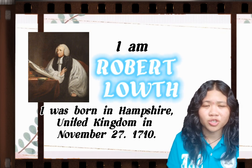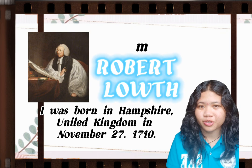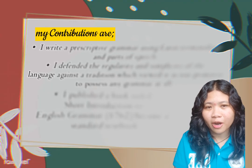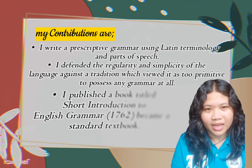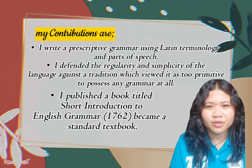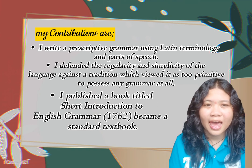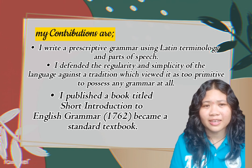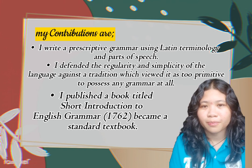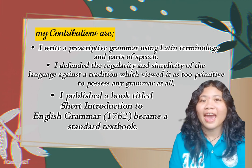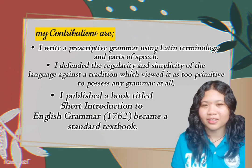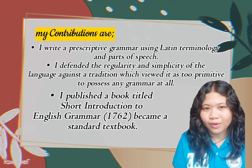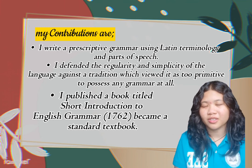Lowth also distinguished between 'shall' and 'will' as a feature of auxiliary verbs. His contributions include: he wrote a prescriptive grammar using Latin terminology and parts of speech; he defended the regularity and simplicity of the language against a tradition which viewed it as too primitive to possess any grammar at all; and he published a book entitled Short Introduction to English Grammar in 1762, which became a standard textbook.